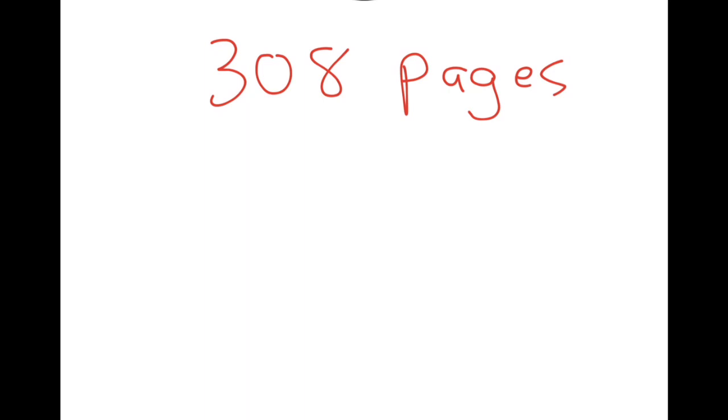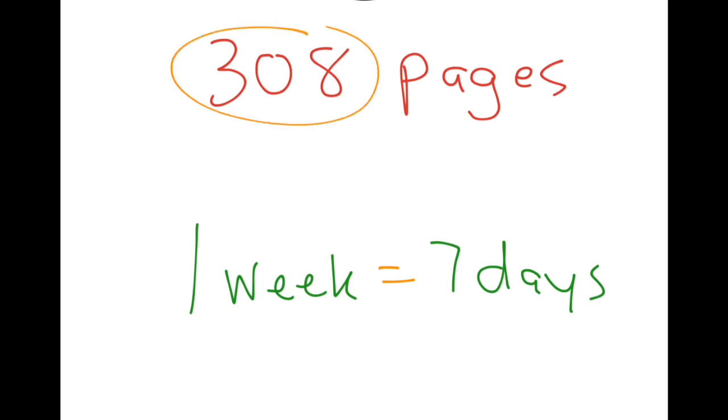The other thing I was thinking was, how long should I allow myself to read this book? You don't want to forget the beginning when you get to the end. So I think a good time limit would be a week, which we all know is the same as seven days. So my goal was to read the book in seven days, so I was going to have to split up those 308 pages over seven days. So the first thing that popped into my head was a division problem of 308 divided by seven.